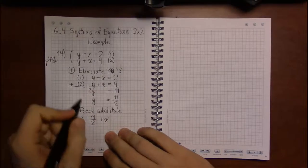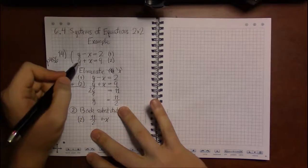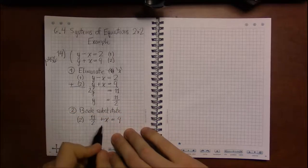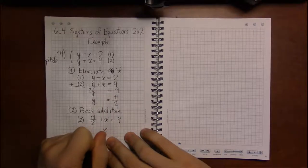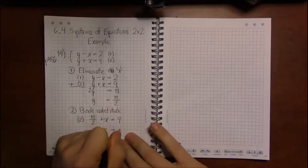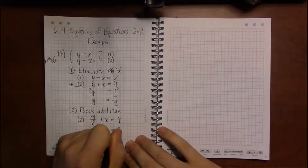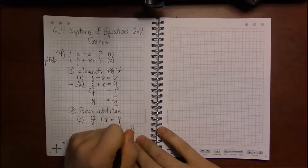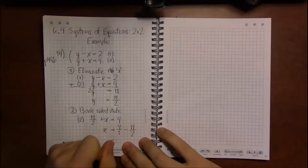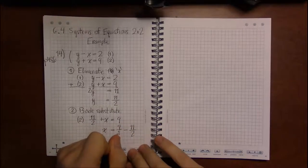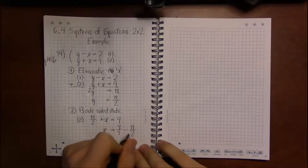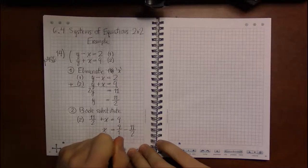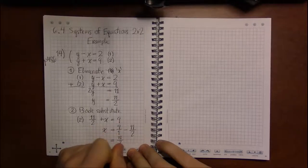So we have 11 over 2 plus x equals 9. To get x by itself, we will need to subtract 11 over 2 from both sides, and we can think of 9 as being 9 over 1. We need to think of it this way because we're going to need to combine fractions. The lowest common denominator between 1 and 2 is 2. So multiply 9 over 1 by 2 over 2 to get 18 over 2.